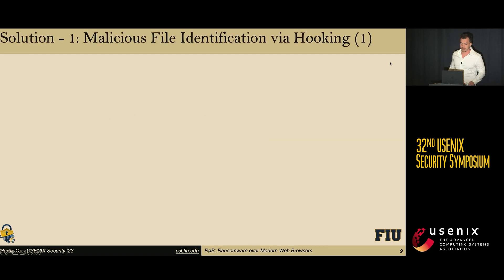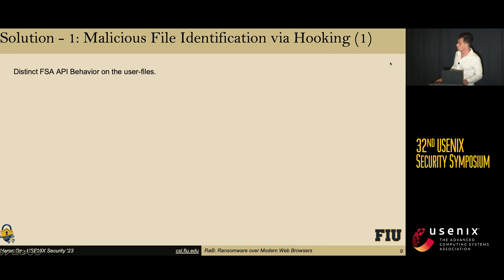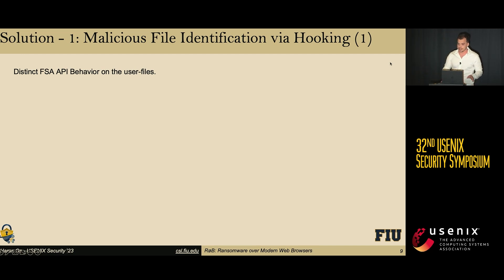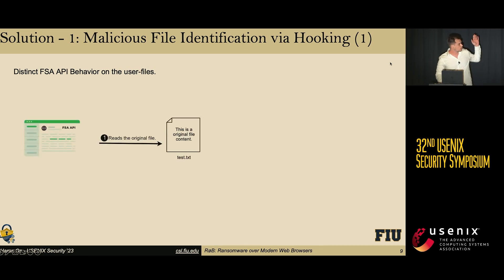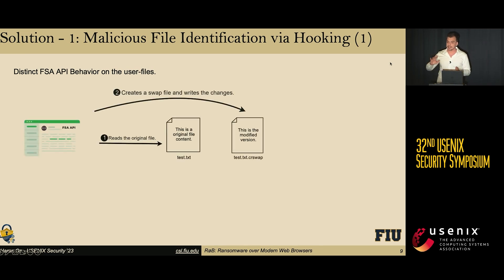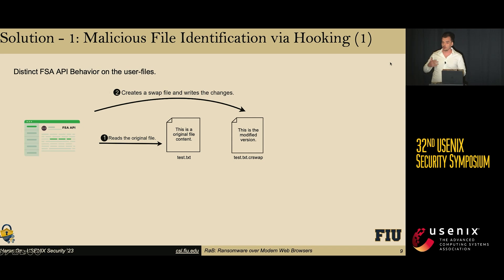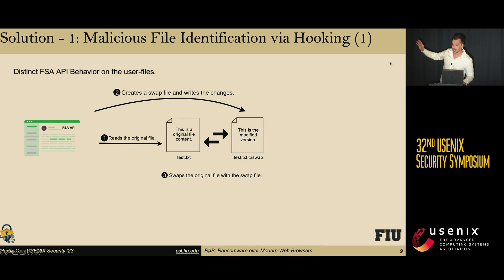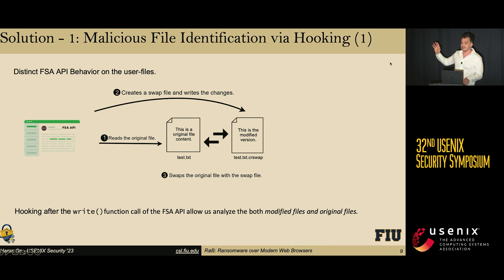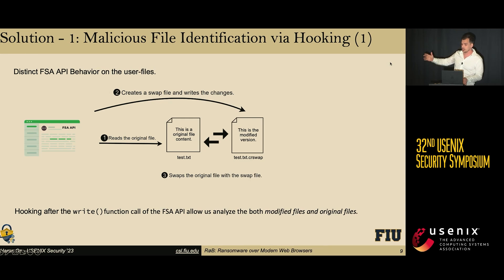Our first solution is malicious file identification via hooking, which operates at the browser level. During our analysis of the FSA API and ROP, we observed a distinct behavior in the user files. Specifically, to modify the files, the website first reads the original file, then creates a swap file and writes the changes to that swap file. That swap file becomes the modified version of the file, and to make the change permanent, the website swaps the original file with the swap file.